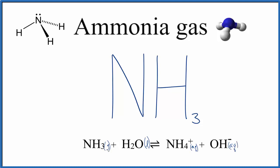Most of the ammonia will just stay dissolved in the water — it won't break apart — but some of it will break apart into the ammonium ion and the hydroxide ion. And when you have hydroxide ions, you'll have an alkaline solution.